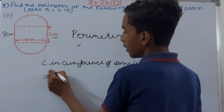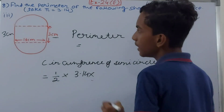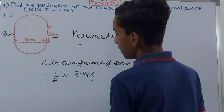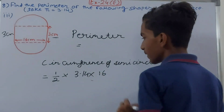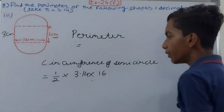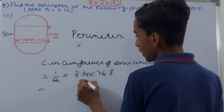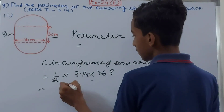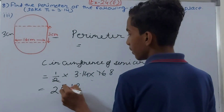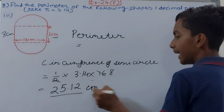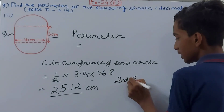Circumference of the first semicircle = 1/2 × π × diameter = 1/2 × 3.14 × 16. Calculating: cancel 2 and 16 to get 8 × 3.14 = 25.12 centimeters.